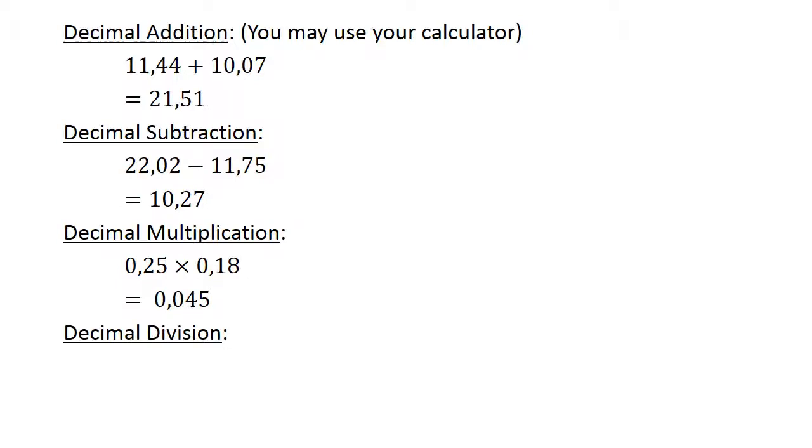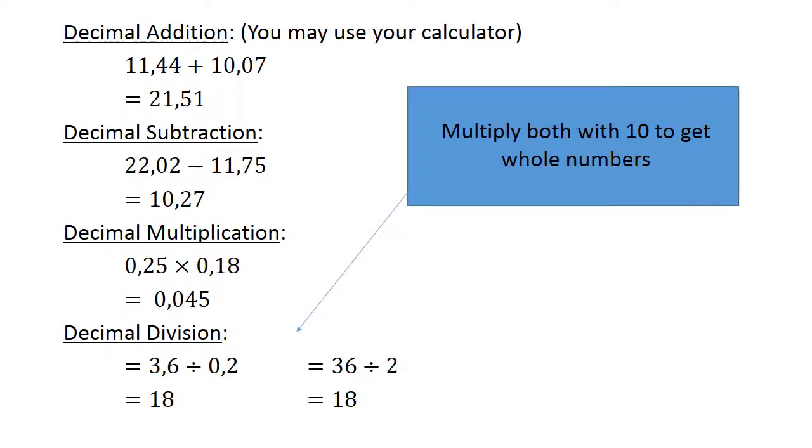Decimal division. 3.6 divided by 0.2. Multiply both with 10 to get whole numbers. 36 divided by 2 equals 18.